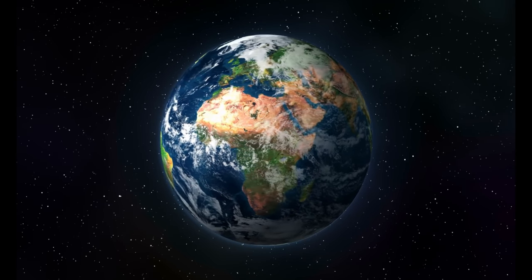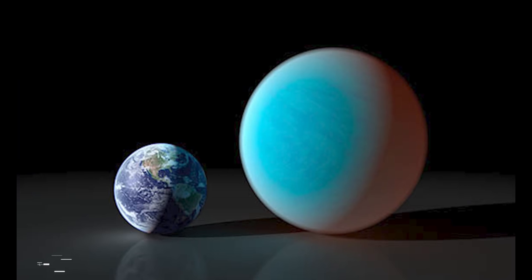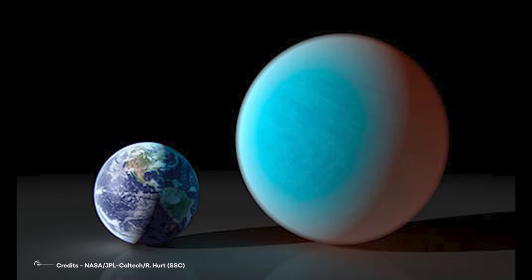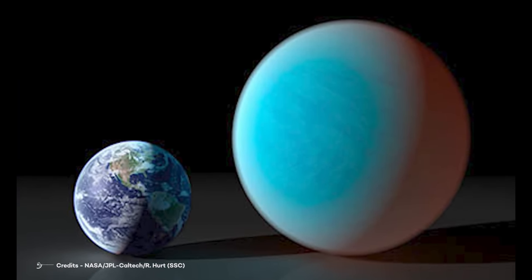23 of them are Terran, which means Earth size, and 36 of them are superterran, which is to say, super-Earths or mini-Neptunes.